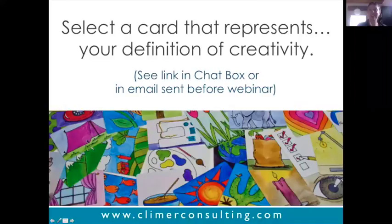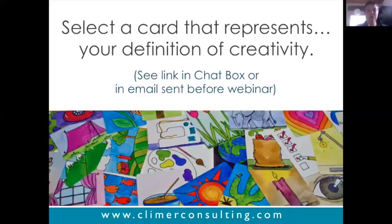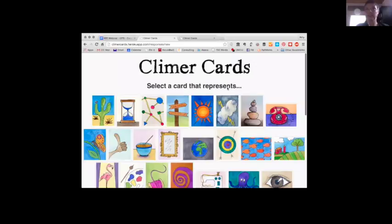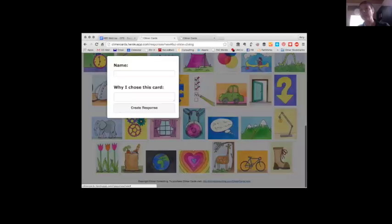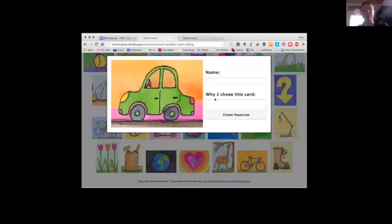Next we're going to experiment with the Climber Cards app. In a moment you'll see a link in the chat box — Dan, if you could also put that in the Q&A box. Or if you got the email before the webinar, use that link. I want you to click on a card that represents your definition of creativity. Let me show you what that looks like on my screen. You should see a screen like this — here's the address if you can't find the link. Select a card, click on it, write in your name, and write in why you chose it.